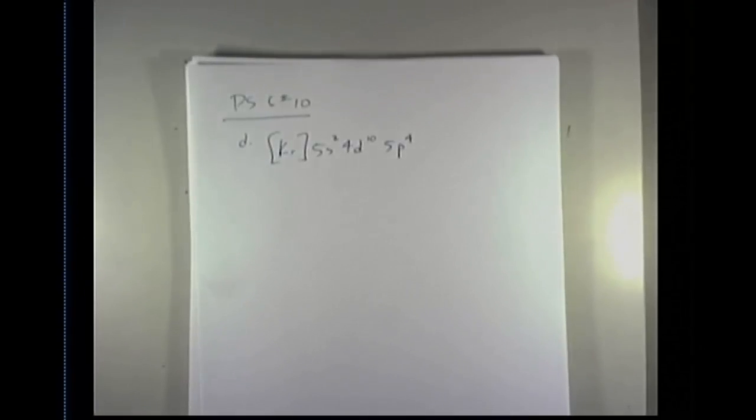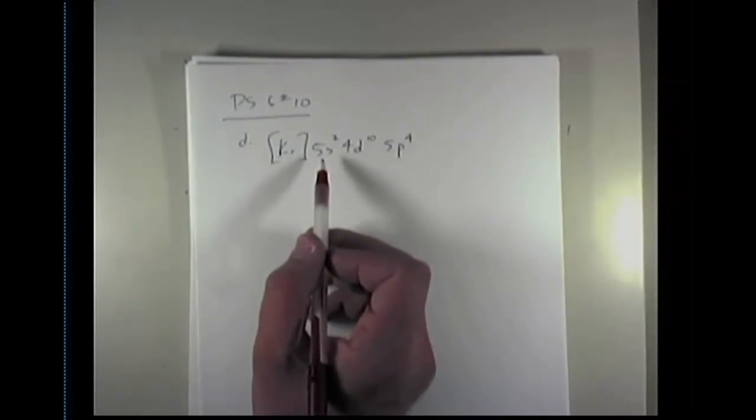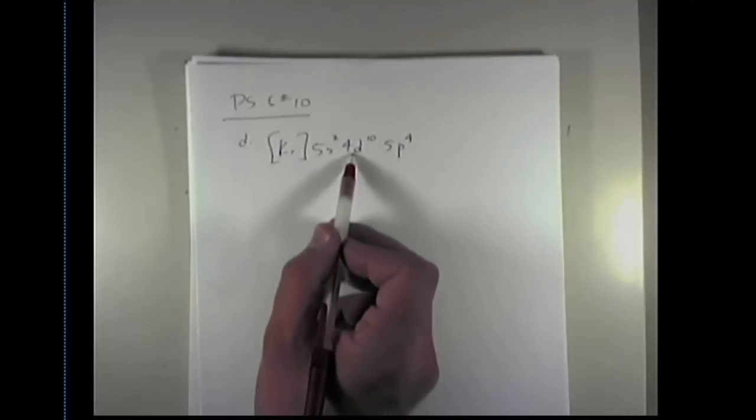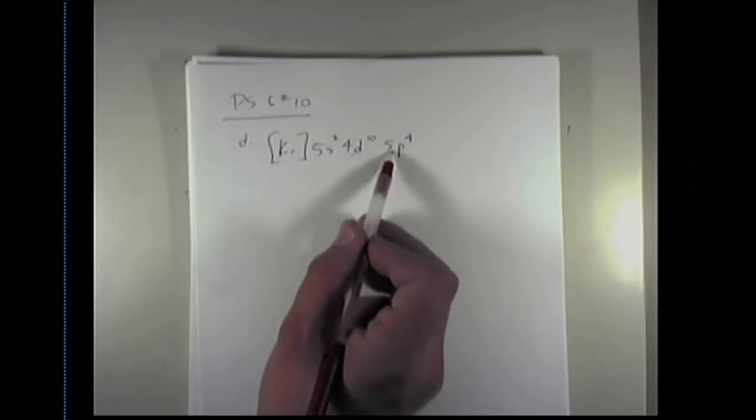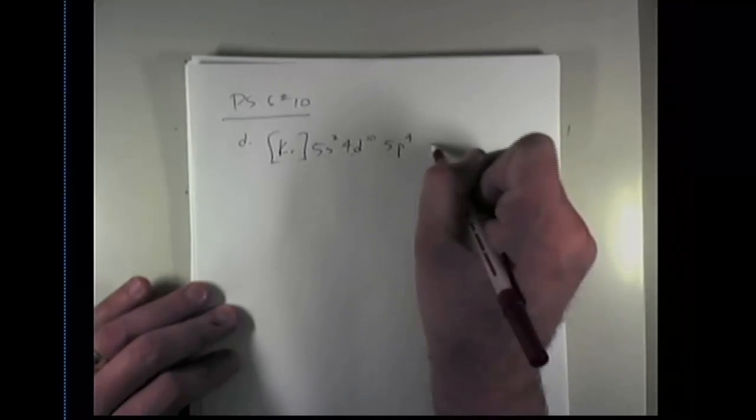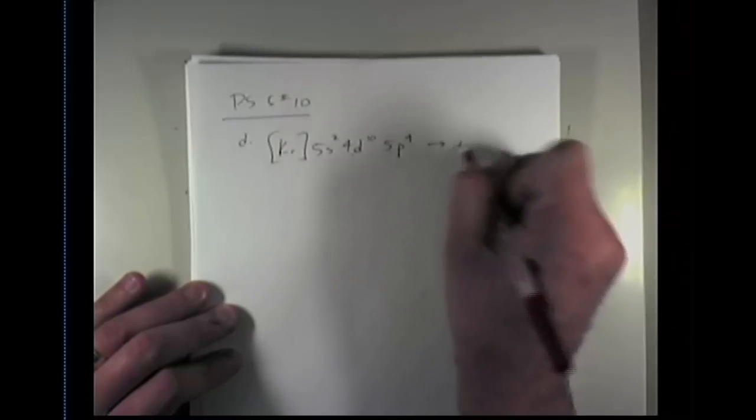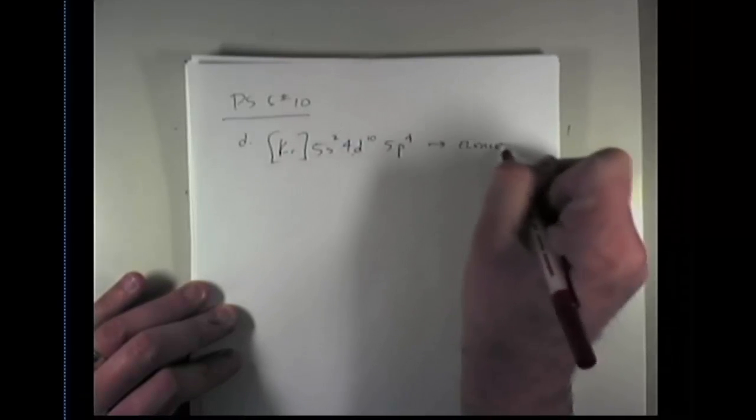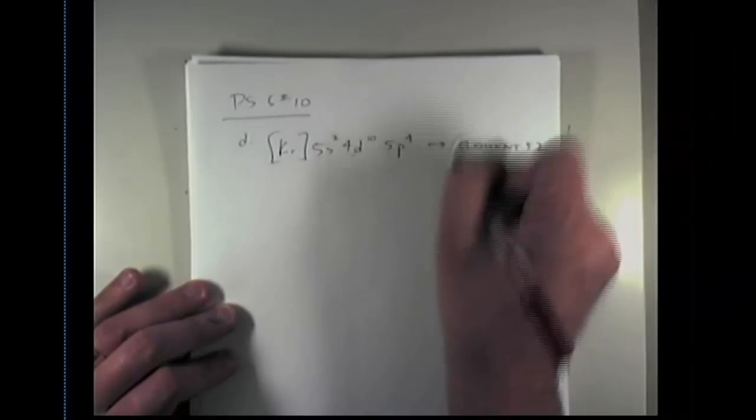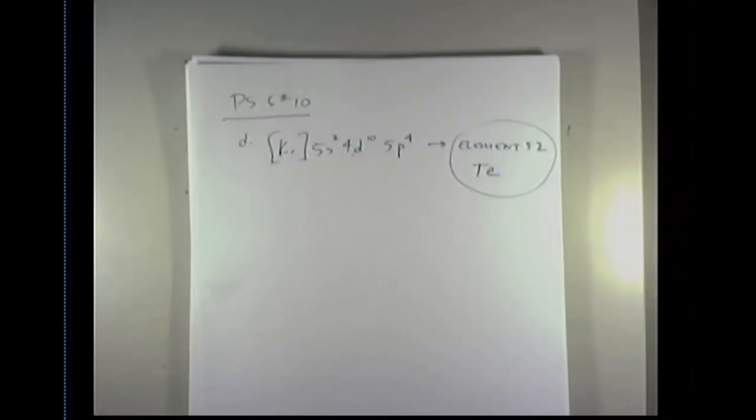Well, I'm going to look at the periodic table, find krypton, and then continue on down the line. 5s2 takes me from rubidium to strontium. 4d10 takes me all the way across that row of Ds. 5p4 takes me 1, 2, 3, 4 elements into element number 52. So that takes me to element 52 from the periodic table, which is tellurium. So that answers the first portion of that question.